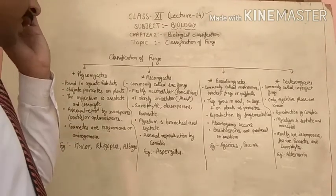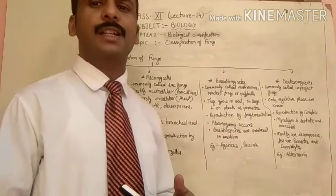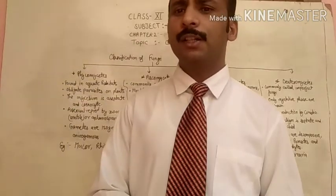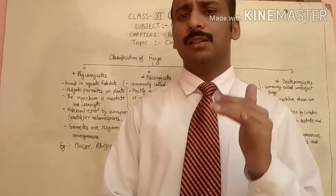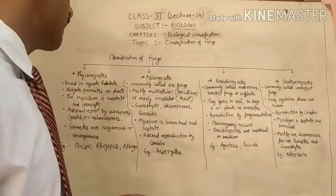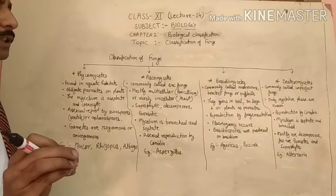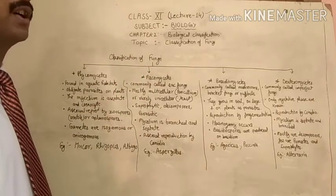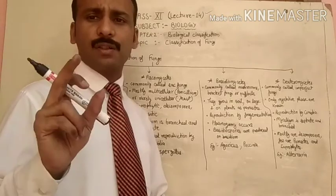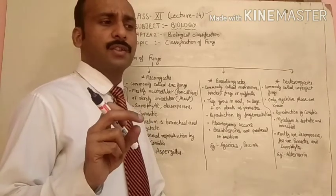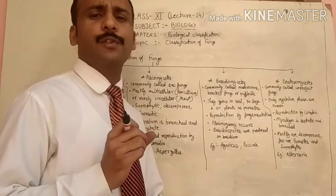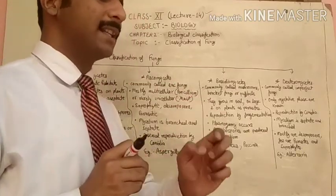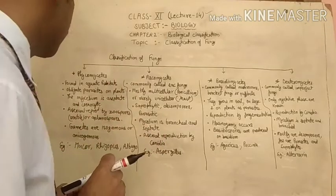These are the four categories of kingdom Fungi. The word 'mycetes' is especially used for fungi because, as we discussed in the last video, the structures of fungi are called mycelium, and this word 'mycetes' is originated from 'mycelium'.